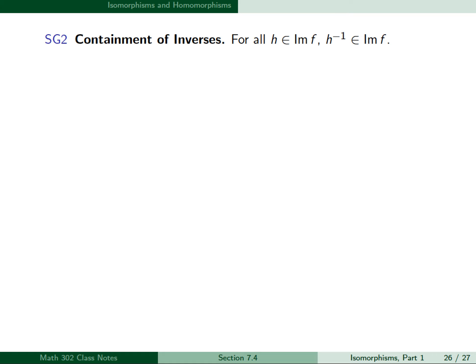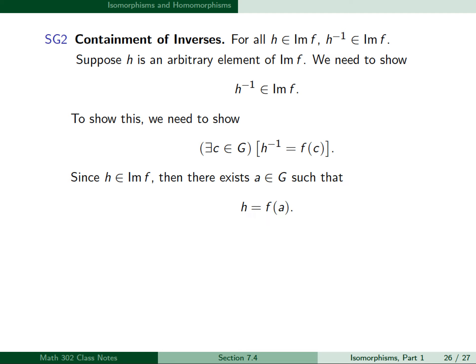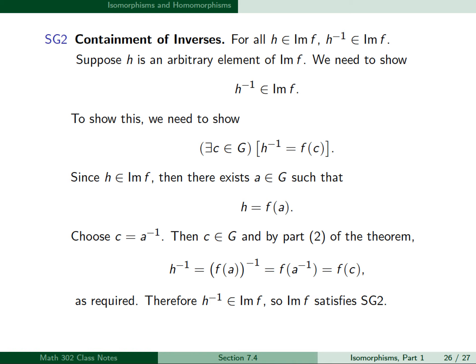For Sg2 (inverses): suppose H is an arbitrary element of the image of f. We need to show H⁻¹ belongs to the image of f, i.e., there exists C in G with H⁻¹ = f(C). Since H is in the image, there exists A in G with H = f(A). Choose C = A⁻¹; then C belongs to G, and by part 2, H⁻¹ = f(A)⁻¹ = f(A⁻¹) = f(C), as required. Therefore the image satisfies Sg2, so the image of f is a subgroup of H. This proves part 3.